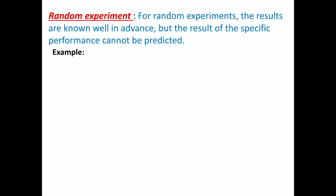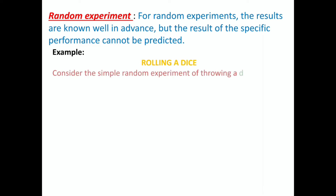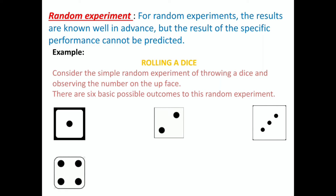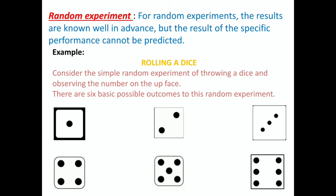Now we shall discuss what is a random experiment. For random experiments, the results are known well in advance but the result of the specific performance cannot be predicted. For example, when rolling a dice, we know the outcomes are 1, 2, 3, 4, 5, or 6, but we cannot predict exactly which number will appear before the die is seen.